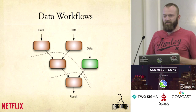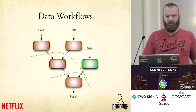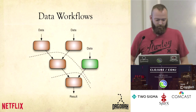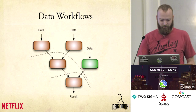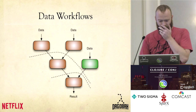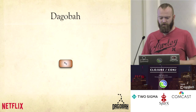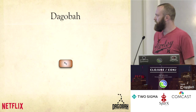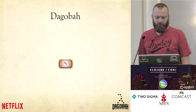So we decided to take some of the Clojure concepts that we know and love and apply them to this problem. That's what we came up with — Dagobah. To start with Dagobah, we start with a single node. This is a node in our DAG.